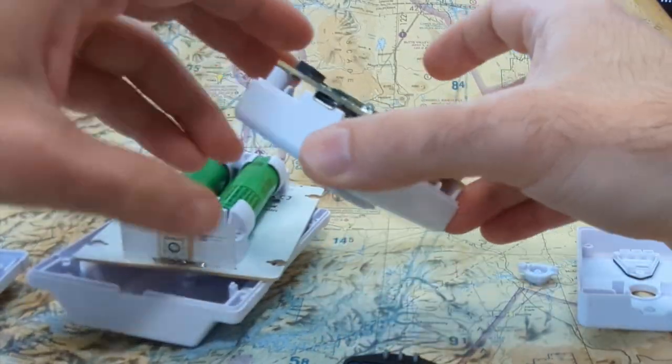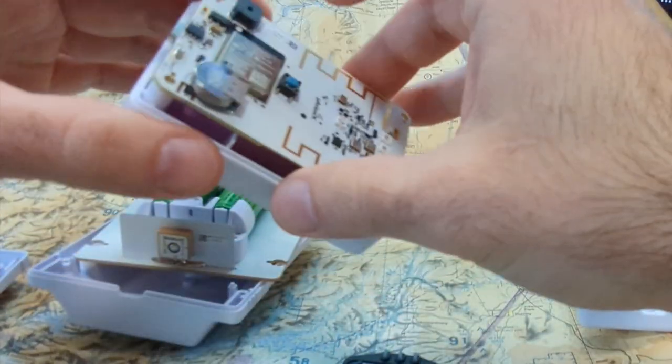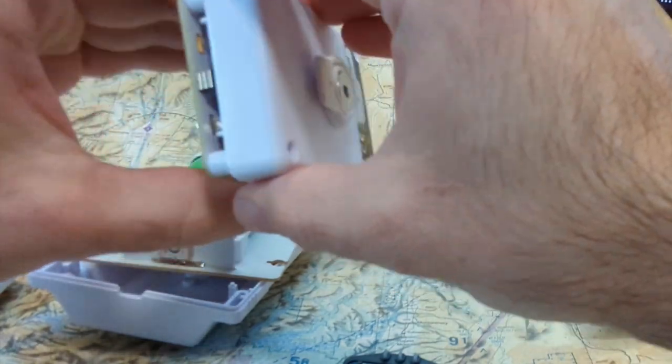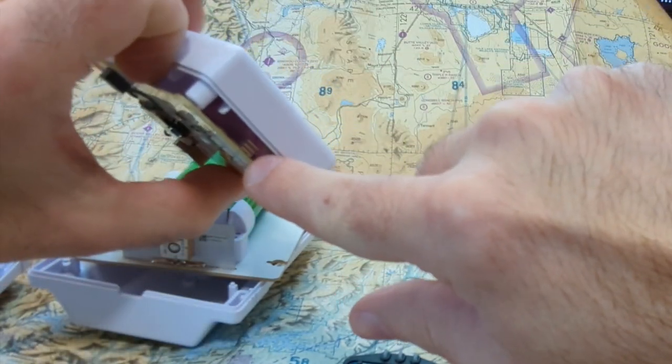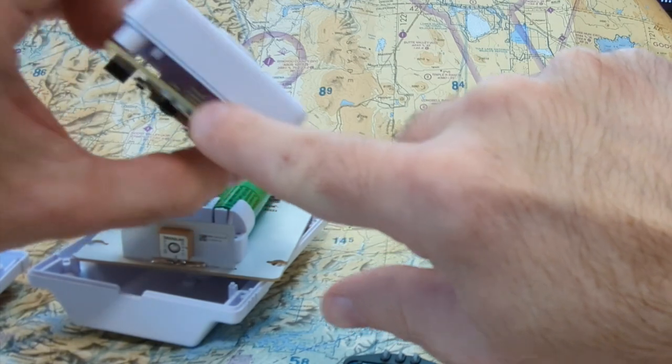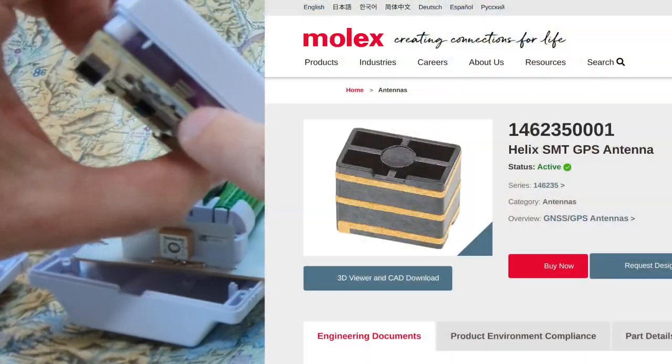If you look at this one, you can't get it apart any further without destroying things, but here is the GPS antenna. It's like a passive 3D crystal or ceramic antenna.